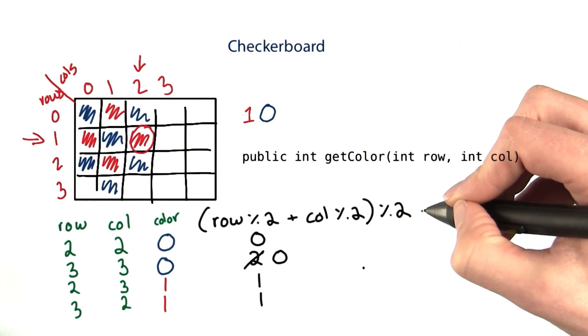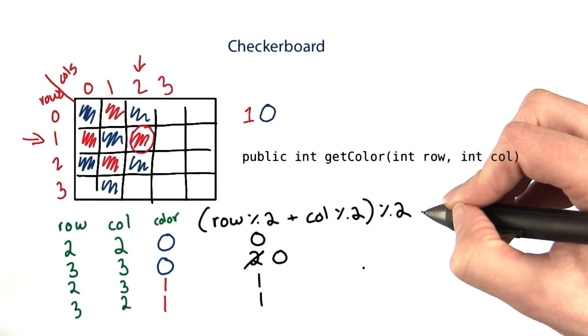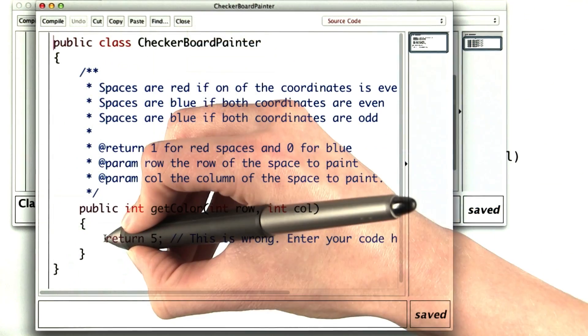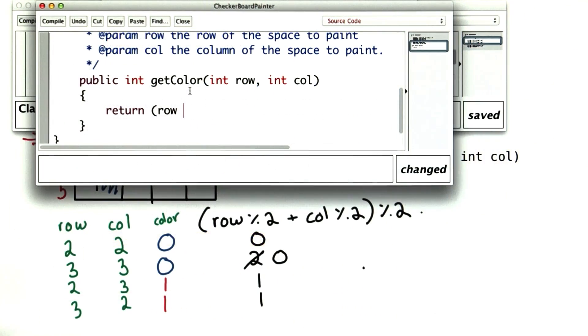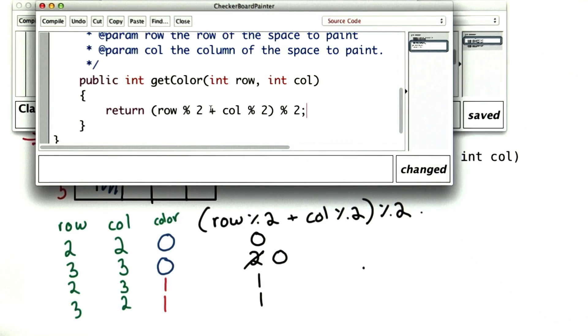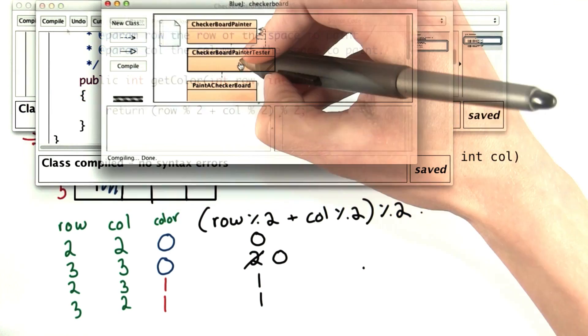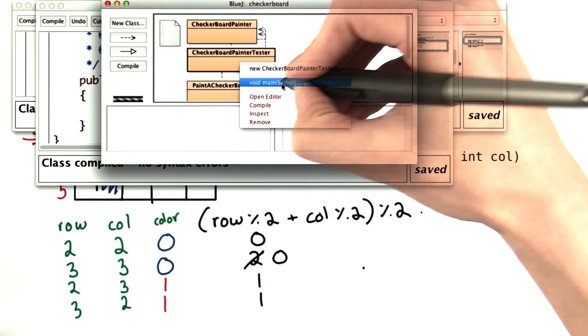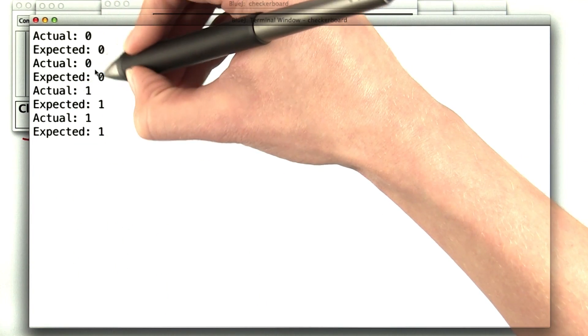Now I'll try putting that expression into the actual program. In the checkerboard painter, instead of returning 5, I want to return row mod 2 plus col mod 2, and then all mod 2. I don't have to put these in parentheses because the plus has lower precedence. And let's try it. If I run the tester, my actual and expected values match up.